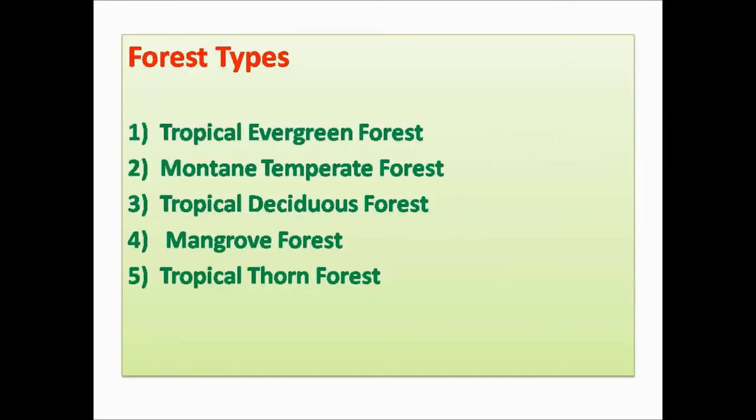The forests in the state are broadly divided into five types: Tropical Evergreen Forest (called Pasmaimara Kadagal in Tamil), Montane Temperate Forest, Tropical Deciduous Forest, Mangrove Forest, and Tropical Thorn Forest. We will see each type in detail.